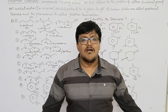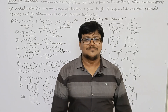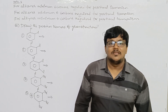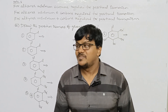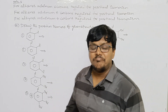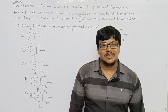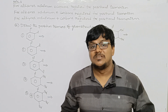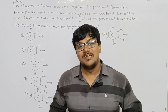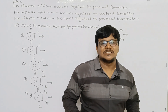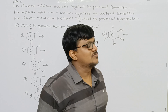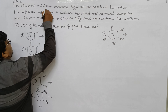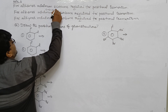One important note: for alkanes (all kinds with substituents), a minimum of 6 carbons is required to exhibit positional isomers. 5 carbons is not possible; 4 carbons is not possible. Minimum 6 carbons are required to exhibit positional isomers.